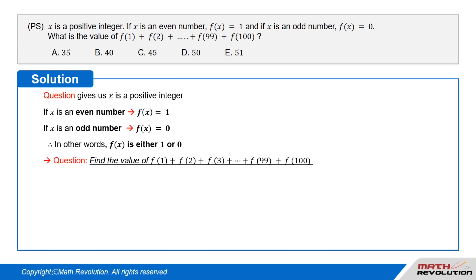We need to find the values of f of 1 plus f of 2 plus f of 3 and so on until f of 99 plus f of 100. All the even numbers will give 1 as their output. And all the odd numbers will give 0 as the output. So the solution is going to be 0 plus 1 plus 0 plus 1 and so on plus 0 plus 1.